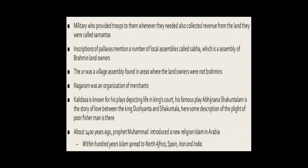Assemblies in the southern kingdoms. The inscriptions of the Pallavas mentioned a number of local assemblies. These included the Sabha, which was an assembly of Brahmin landowners. This assembly functioned through subcommittees which looked after irrigation, agriculture operations, making roads, and so on.